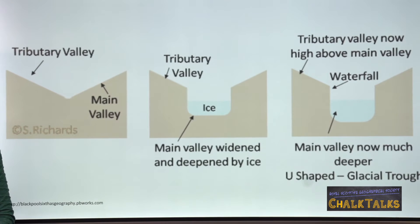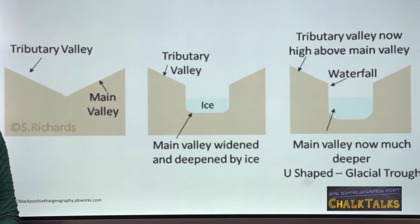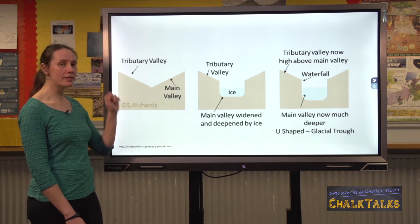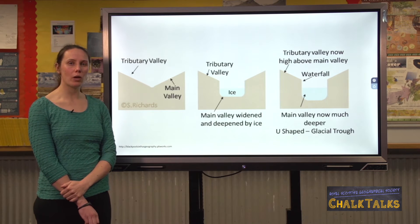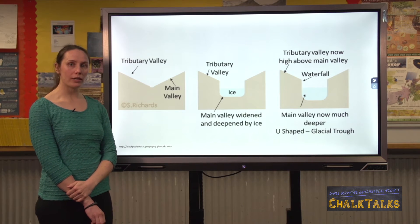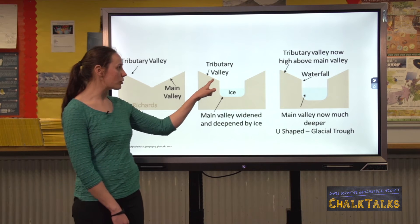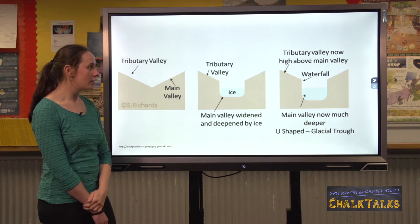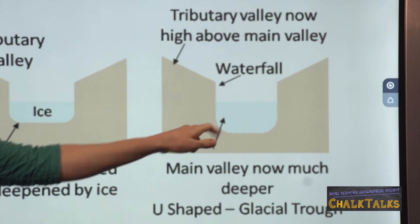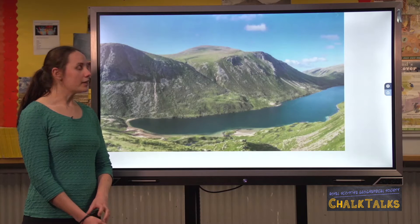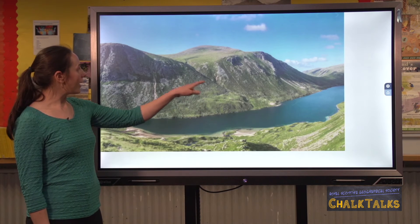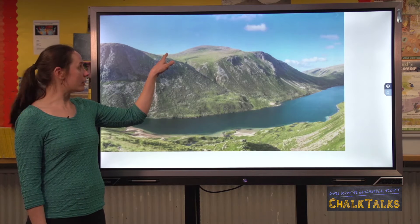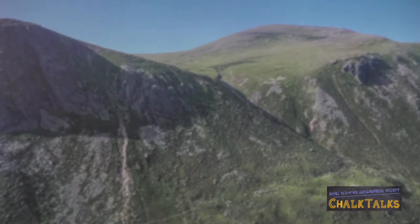A feature often seen on the sides of U-shaped valleys is a hanging valley. These form because the smaller tributary valleys had smaller glaciers in them. Bigger, deeper glaciers have more erosive power, so the main valleys were eroded more deeply than the tributary valleys. After the ice retreats, there's often a waterfall where the tributary rivers join the main valley. A good example of a hanging valley is in Glen Avon, where there's Coire Raibert above and a smaller tributary glacier would have joined the main valley glacier.